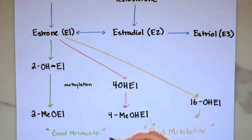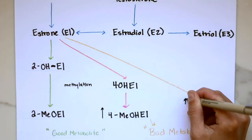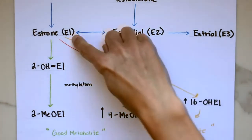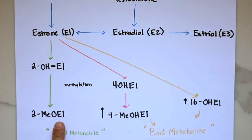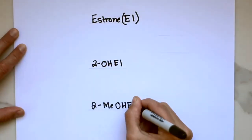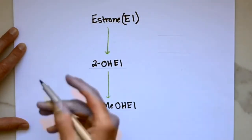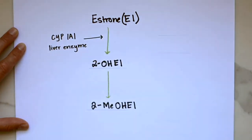So in clinical practice, we can measure these different metabolites. And if an individual is producing too much of the 4-hydroxyl and potentially 16-hydroxyl metabolites compared to the 2-hydroxyl metabolite, then we focus on redirecting the estrogen down the 2-hydroxyl pathway. And to support the 2-hydroxyl pathway, we use supplements and foods that upregulate the CYP1A1 liver enzyme that is responsible for the hydroxylation of estrone into the 2-hydroxyl metabolite.